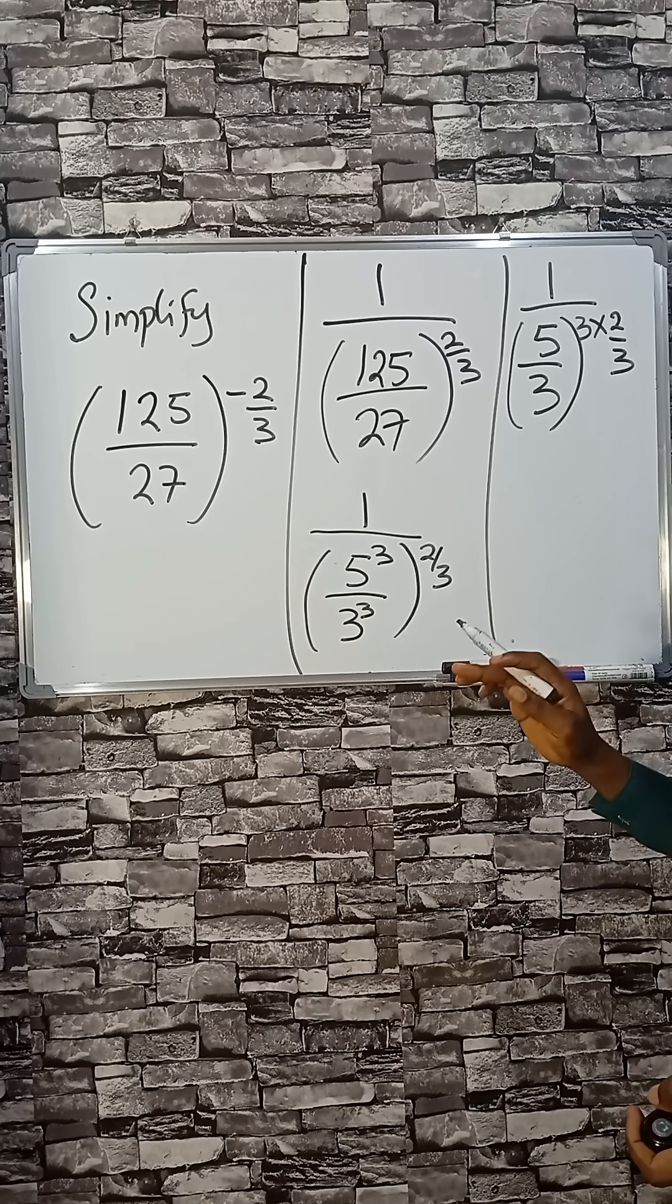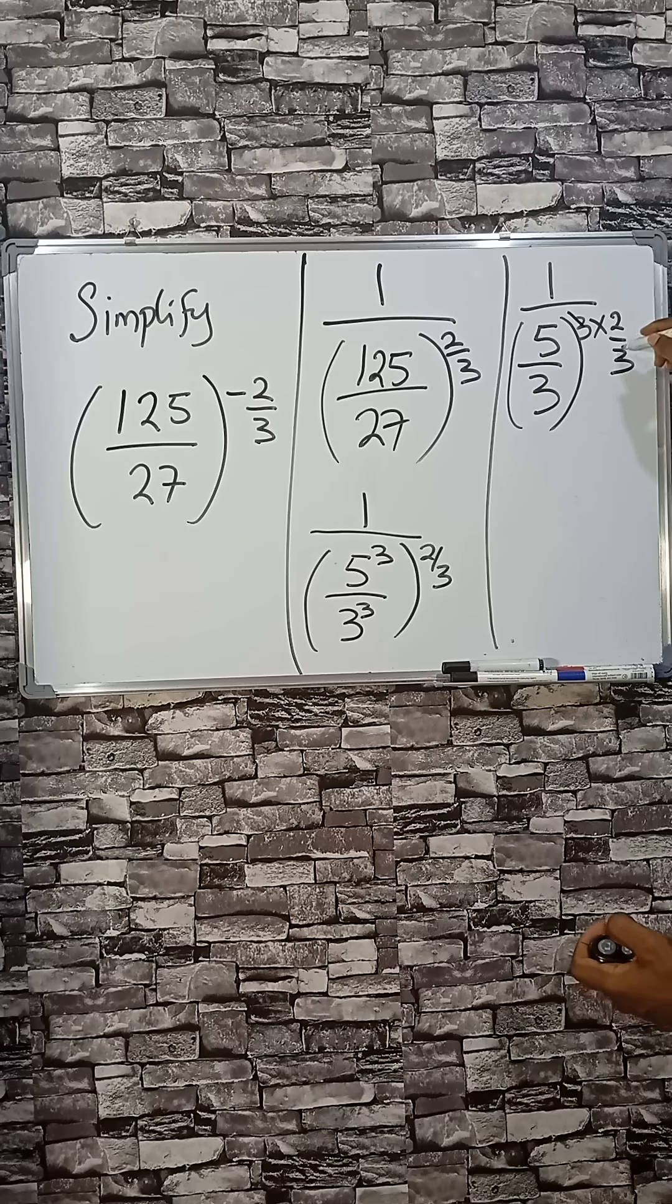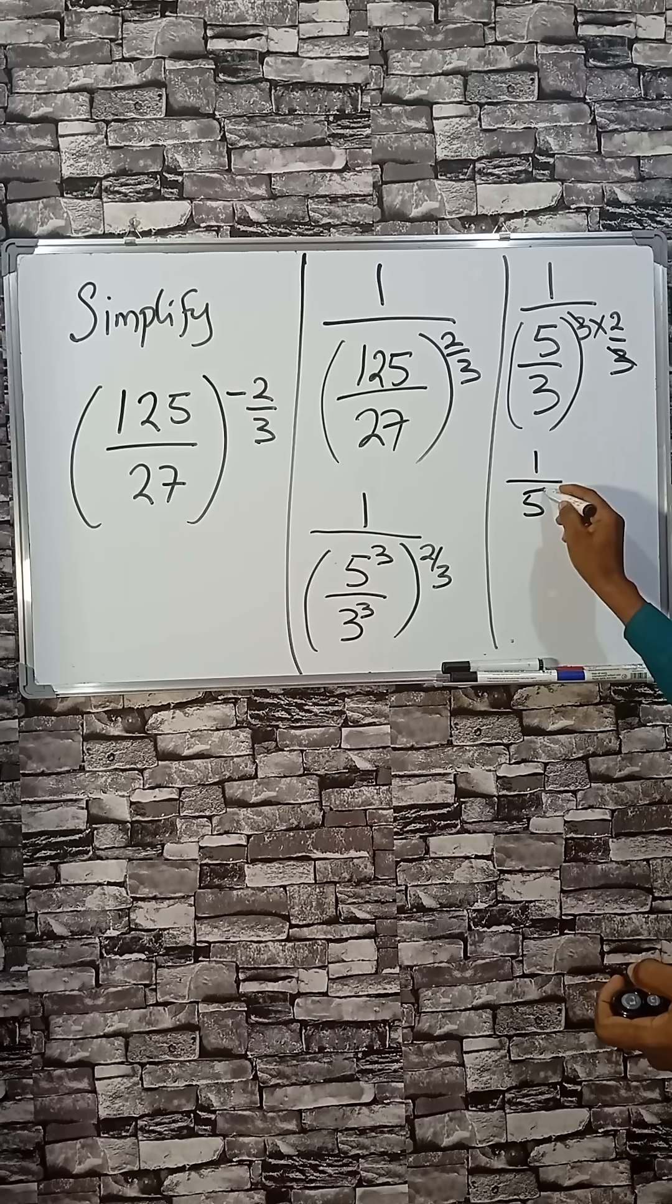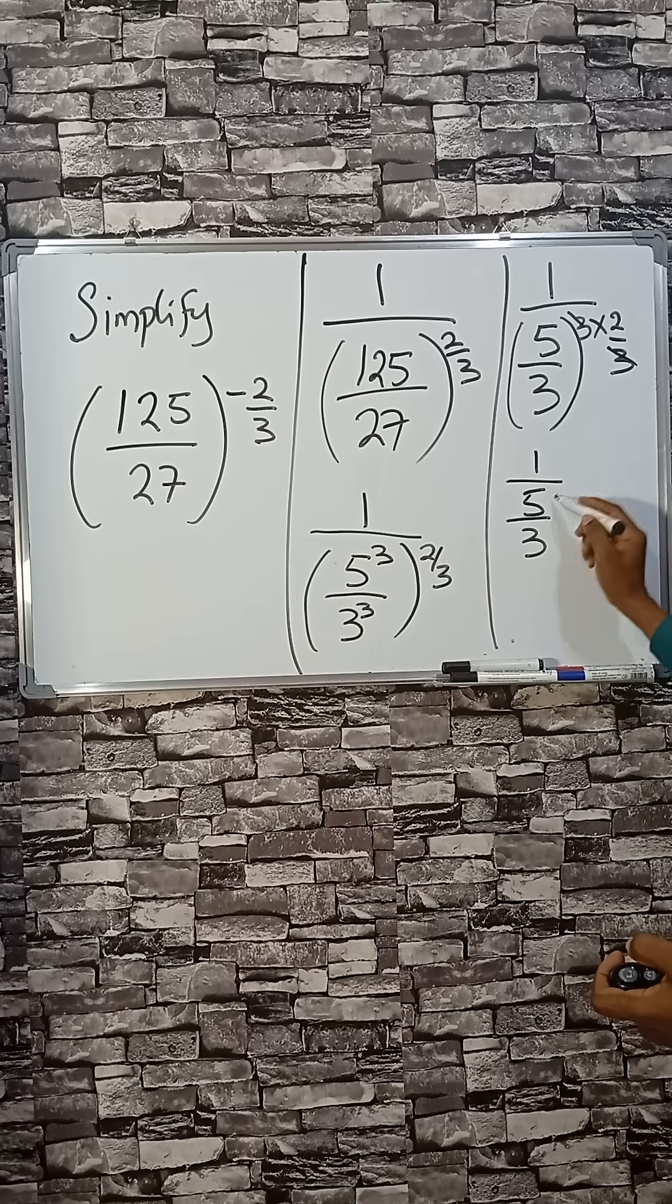From one of the laws of indices, the powers come by themselves. So if that happens, this will cancel this, giving us 1 divided by 5 over 3, then this is left, which is 2.